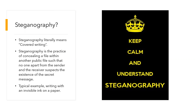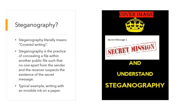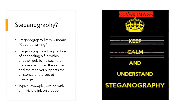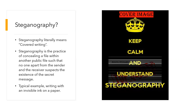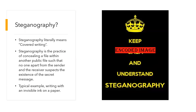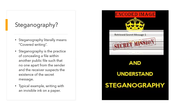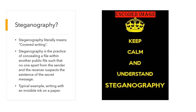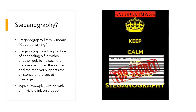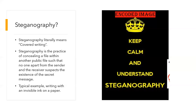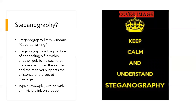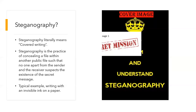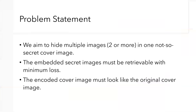To explain this process better, as you can see on the right, we initially choose a cover image. We embed secret messages inside the cover image. Once this embedding is done, it is called an encoded cover image, which is passed to the retriever. The retriever then retrieves the secret messages. In this entire process, this encoded cover image is supposed to look exactly the same to avoid suspicion.